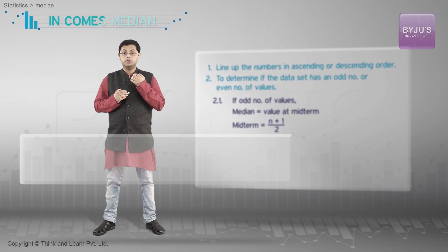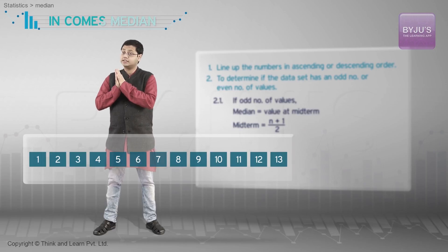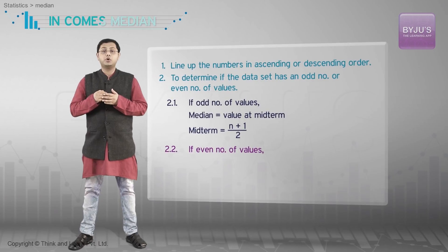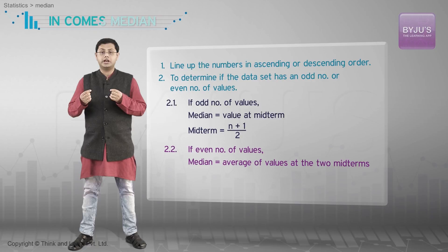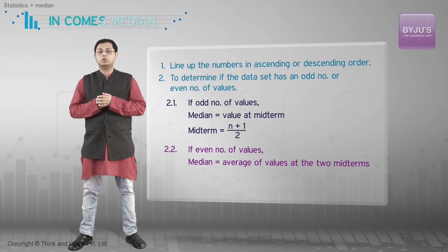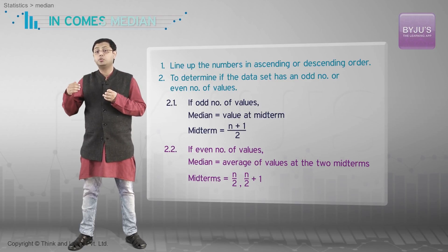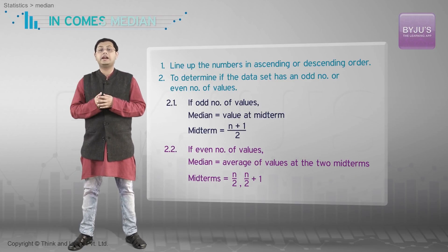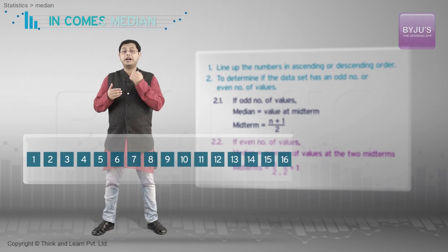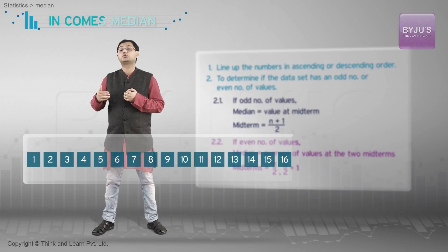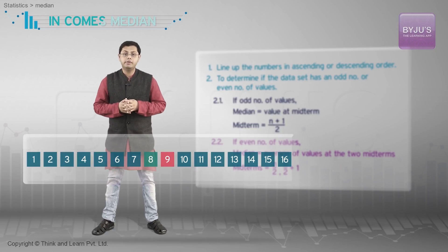For example, if n = 13, the value at position (13 + 1) / 2 = 7, so the seventh term is the median. If you have an even number of values, find the median by adding the two middle ones together and dividing by 2. You find the midpoint using the n/2 and (n/2 + 1)th terms. For example, if n = 16, the mean of the 8th and 9th observations is the median.